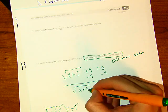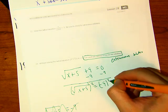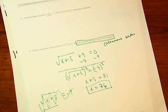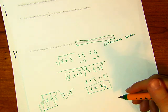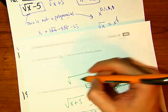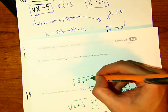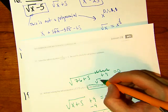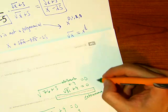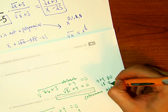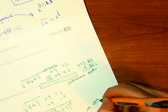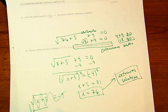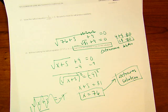Let's verify anyway: subtract 9 from both sides to get square root of x plus 5 equals negative 9. Square both sides: x plus 5 equals 81, so x equals 76. But plugging it in: square root of 76 plus 5 plus 9 equals square root of 81 plus 9, which is 9 plus 9 equals 18, not 0. So x equals 76 is an extraneous solution. That was a really nice question — we're done with the packet.